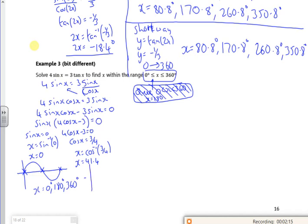On the cos one, going from 0 to 360, I've got my picture, dodgy picture, sorry about that. Going across there for 3 quarters, so I have a 41.4. And the other one, because of the symmetry, will be 360 minus it. So I've got 41.4 and I've also got 318.6.